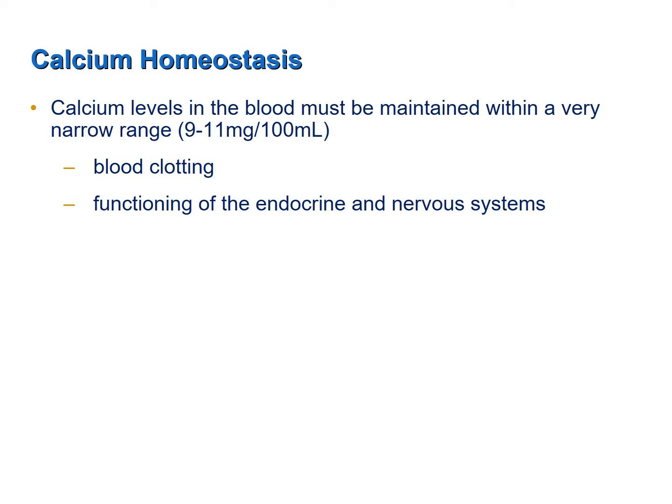Calcium homeostasis is very important. Calcium levels in the blood must be maintained within a very narrow range because calcium participates in very important functions. Calcium is involved in blood clotting, and also in the secretion of hormones and neurotransmitters. So for the proper functioning of the endocrine system and the nervous system, both controlling systems, proper levels of calcium in the blood are required.